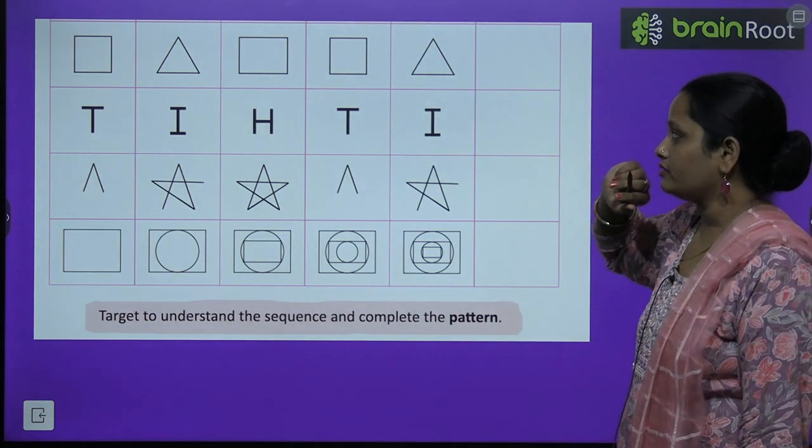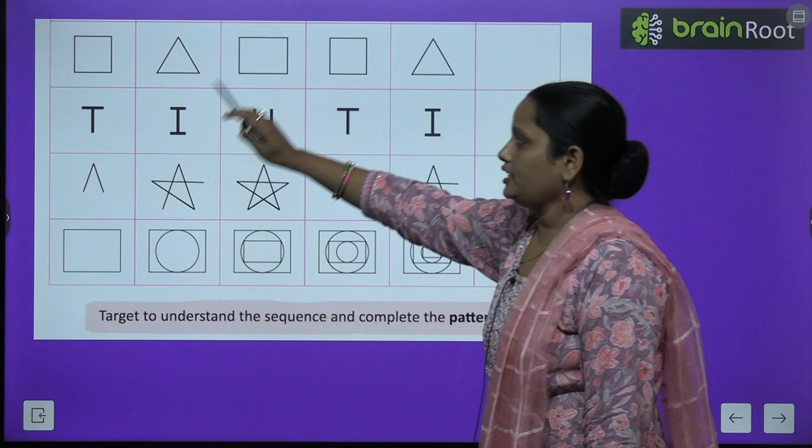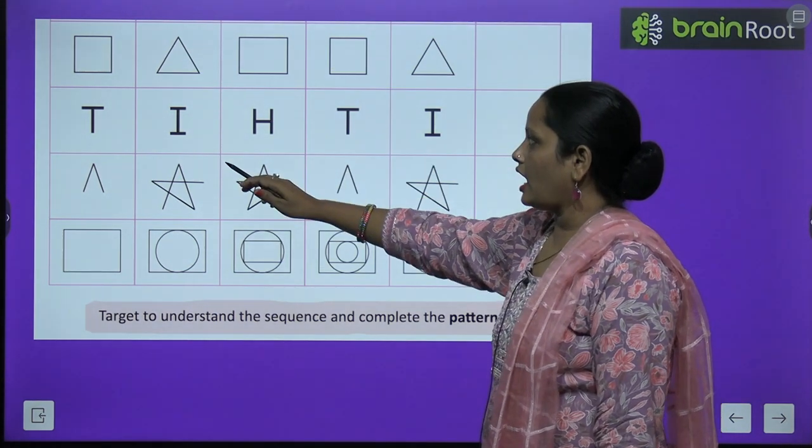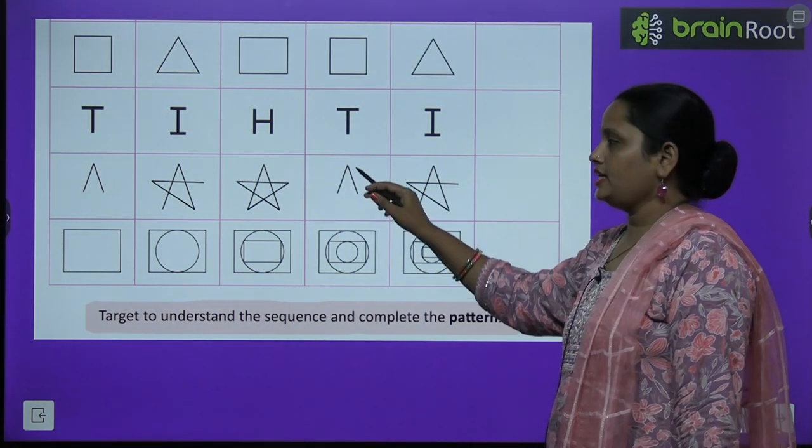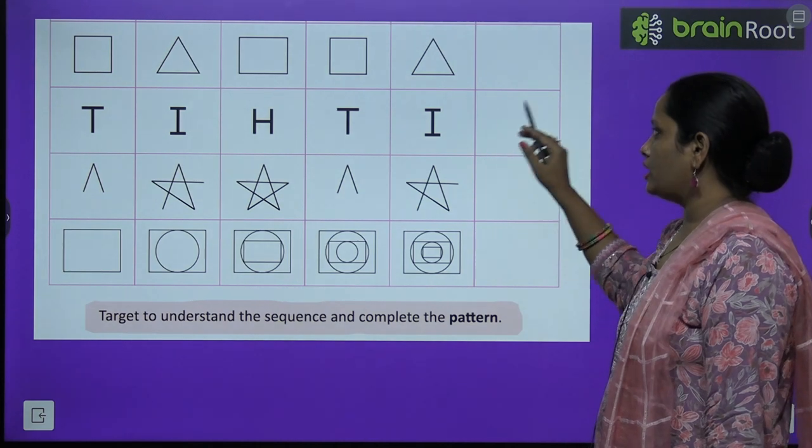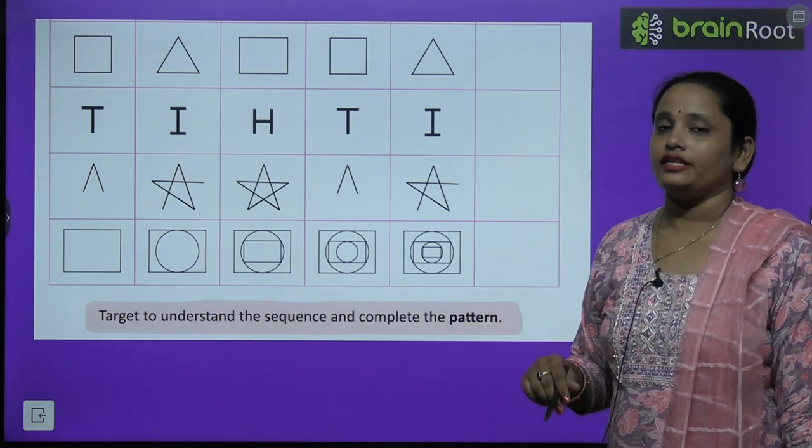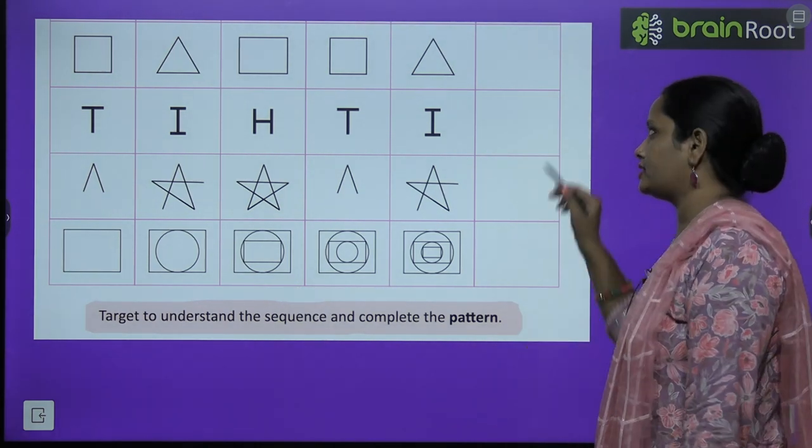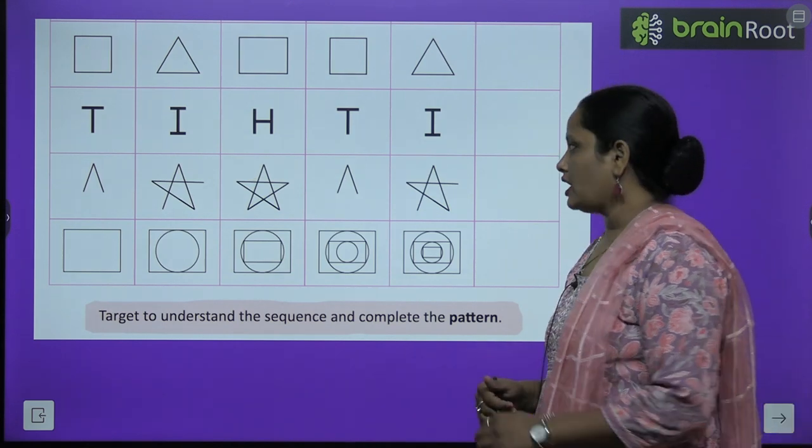So draw it yourself. Next what is there? T, I, H, T, I. What will come here? Yes, you are right. H.